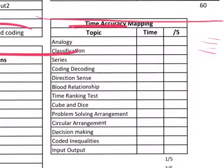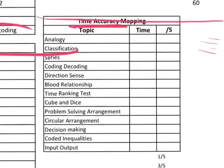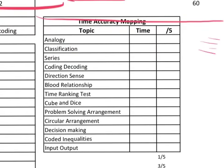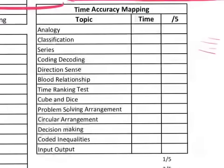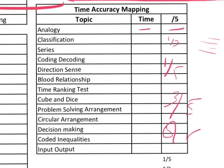We will end our day with time accuracy mapping. Please pause the video here and try to find out — after the class — how much time you are taking and what is your accuracy: 1 out of 5 is low accuracy, 3 out of 5 is good accuracy, 5 out of 5 is the best. For example, for circular arrangement, if you are always getting 1 out of 5 and can't even read the puzzle, why waste time on that topic in the exam?